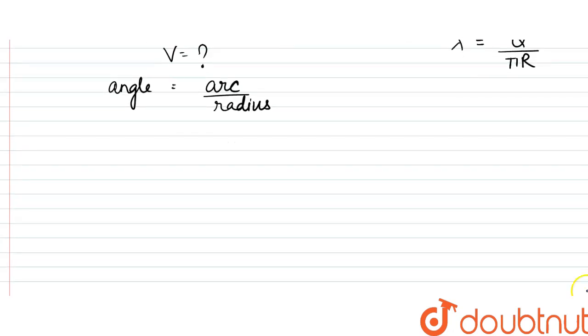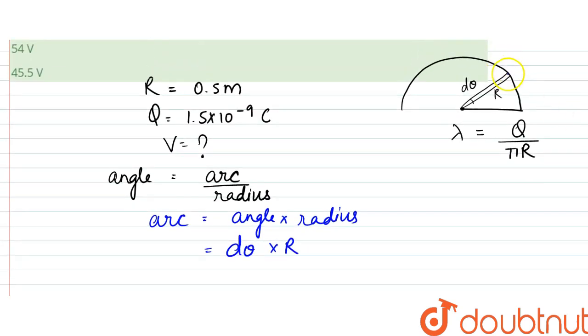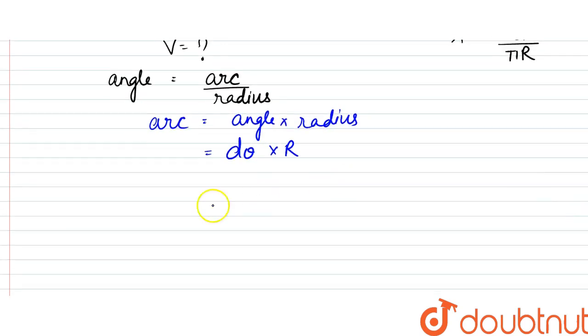So first of all, from here, arc can be written as angle into radius. So it would be dθ × r. For this small arc length, it would be equal to this much.